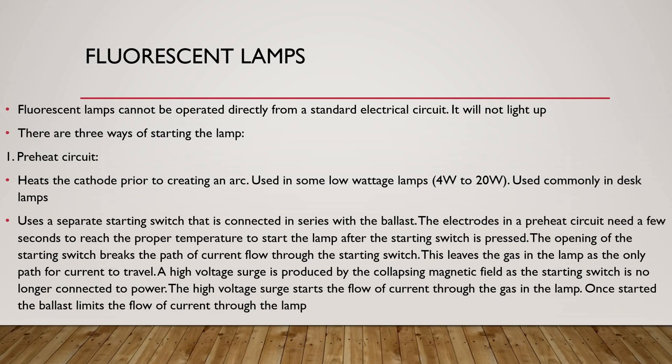The preheat circuit is used commonly in desk lamps. It uses a separate starting switch that is connected in series with the ballast. The electrodes need a few seconds to reach the proper temperature to start the lamp after the starting switch is pressed. The opening of the starting switch breaks the path of current flow, leaving the gas in the lamp as the only path for the current to travel. A high voltage surge is produced by the collapsing magnetic field as the starting switch is no longer connected to power. This high voltage surge starts the flow of current through the gas in the lamp, and the ballast then limits the current flow through the lamp.